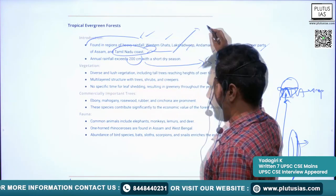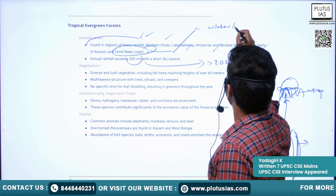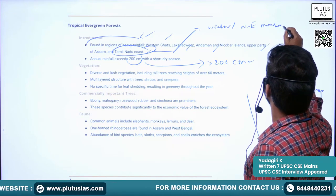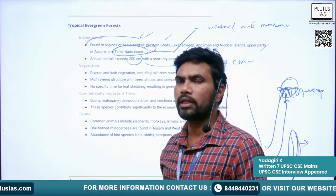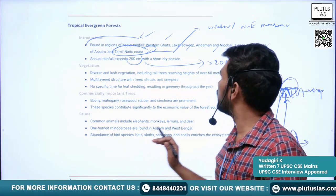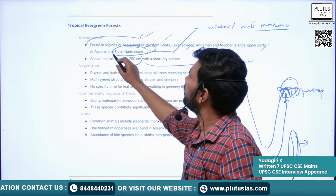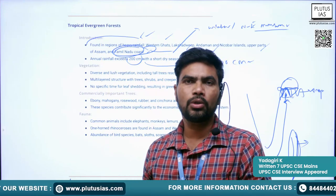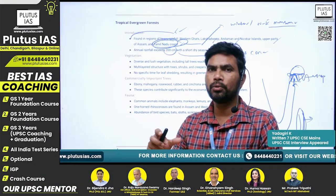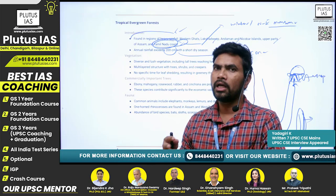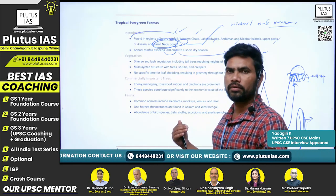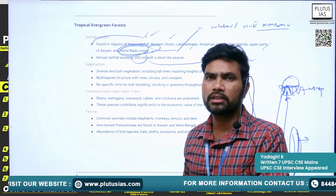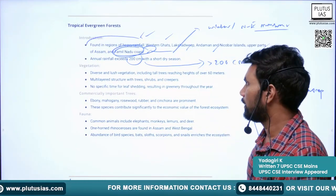The Tamil Nadu coast receives heavy rainfall during the northeastern monsoon, so moisture is available almost throughout the year except for 2 to 3 months in summer. Because of this year-round moisture availability, we can also find tropical evergreen forest along the Tamil Nadu coast.